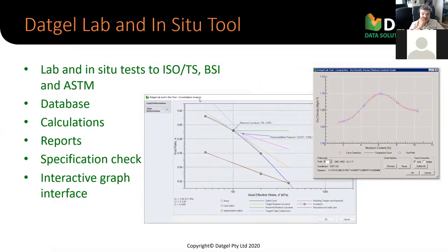The Lab and In Situ Tool is an add-in DatGel created for labs to calculate and present lab data. Most recently we have been working on the consolidation test, just about to release that. We have most other tests previously done — the only test we haven't done yet is triaxial, which is on the cards this year. Tests covered include PSD, all classification tests, compaction-related tests, chemical tests, direct shear, UCS, and point load — most of the common ones you'll come across.